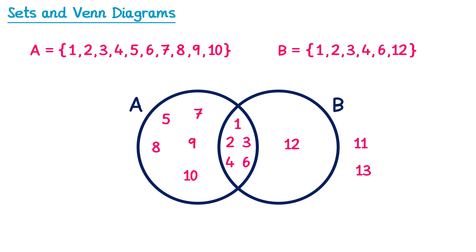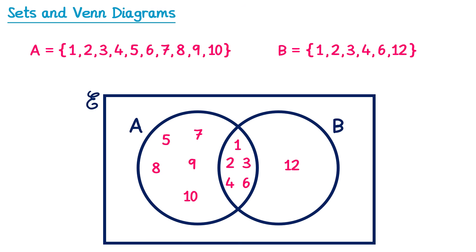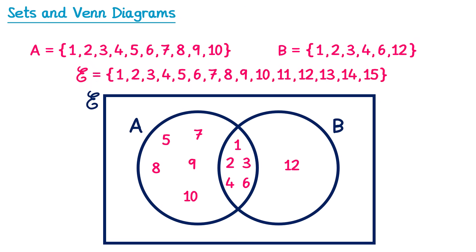So would 13, 14, 15, negative 4, 100, 0, 0.7, pi, or 6.13 — in fact, there are infinitely many numbers not inside sets A and B. To save writing them all down, we draw a rectangle around the Venn diagram and label it with the symbol ξ, which stands for the universal set. The universal set is the set of all possible numbers that need to go inside the Venn diagram. For example, if the universal set is the positive integers from 1 to 15, then all numbers from 1 to 15 must go somewhere inside the diagram.